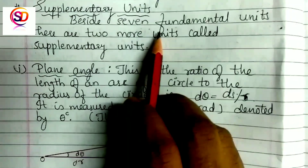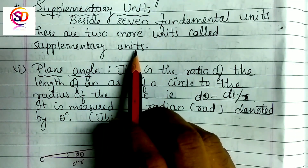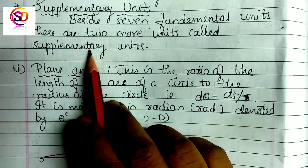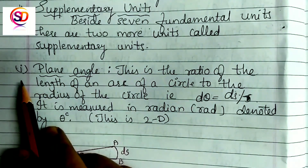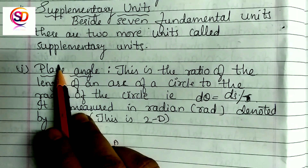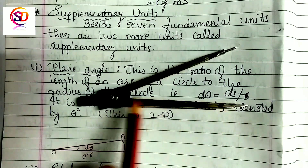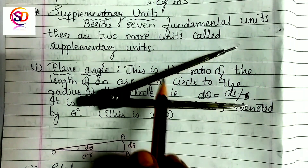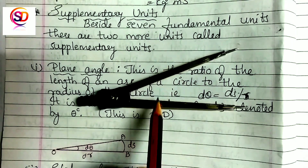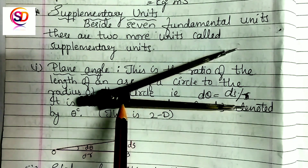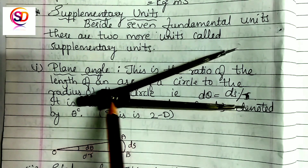Besides the seven fundamental units, there are two more units called supplementary units. These units are used in special cases, which is why they are kept separately. The first supplementary unit is the plane angle. The plane angle is always 2D — two-dimensional. You see two rays emitting from a single point making an angle theta between them, which is why it is called a plane angle.